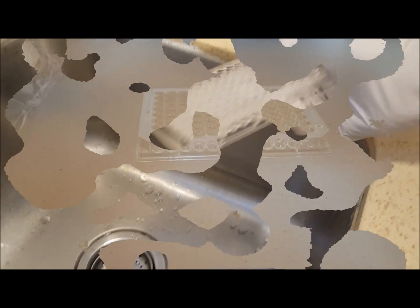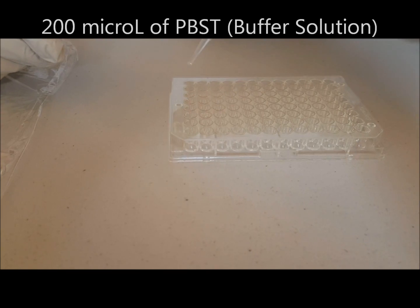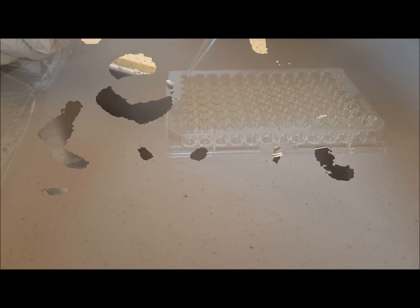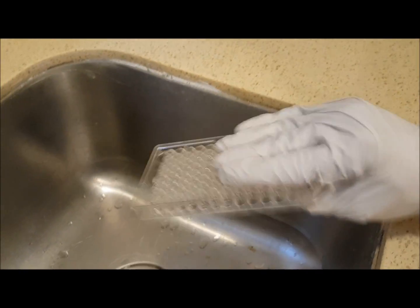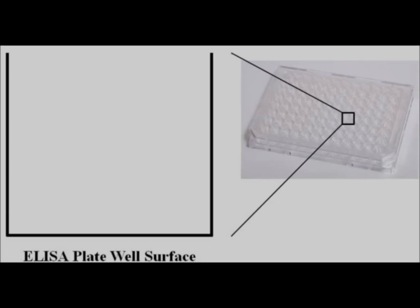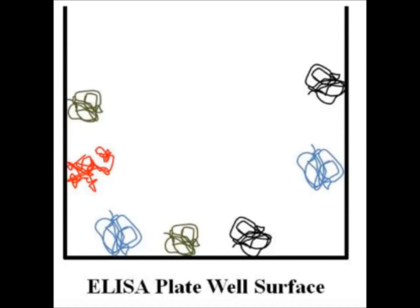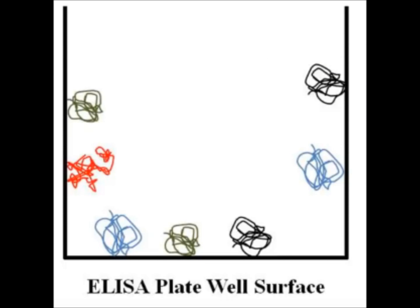The wells are then washed with 200 microliters of buffer solution. The excess is removed. Through this process, the protein, including the protein with the antigens, adhere to the well walls. ELISA wells have high affinity to proteins in general.